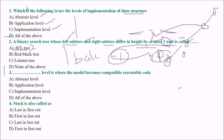Next: which level is where the model becomes compatible with the executable code? The answer is the implementation level — at this level, the model becomes compatible with executable code.